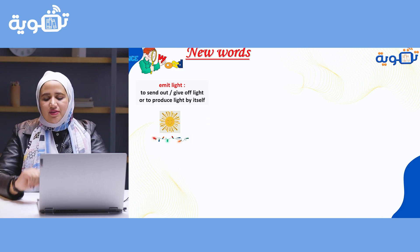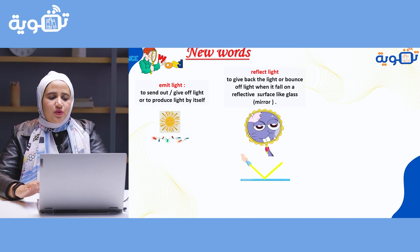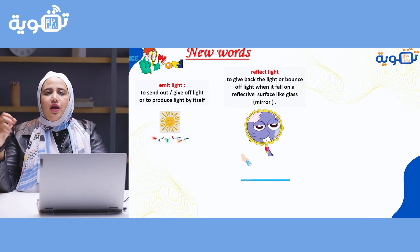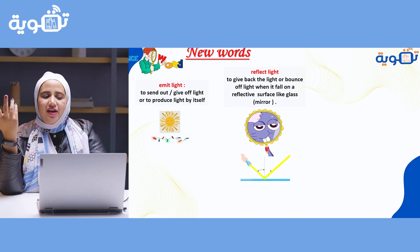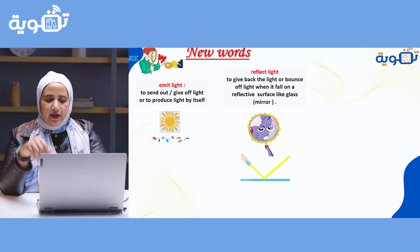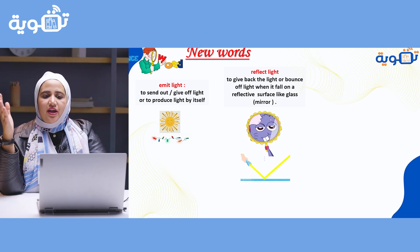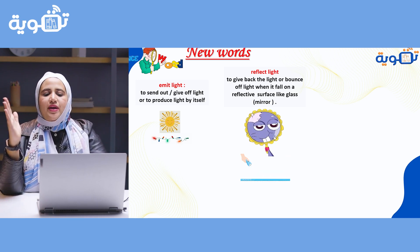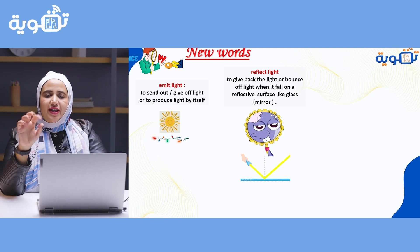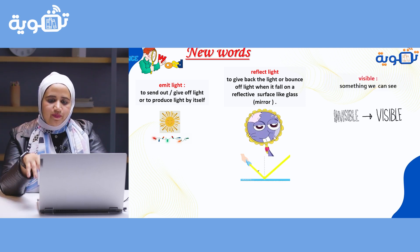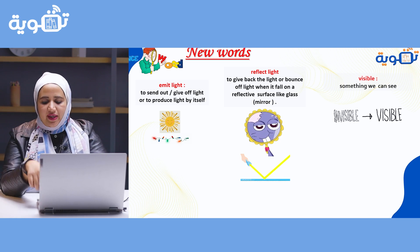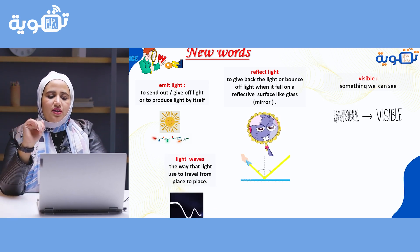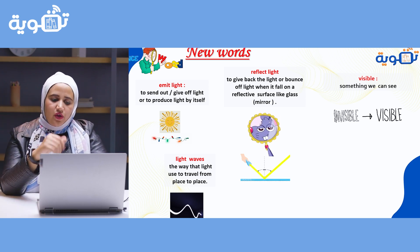What are our new words today? The first word: emit light — like send out light, give off light, produce light. Reflect light — give back the light or bounce off light when it falls on a reflected surface like a mirror. Visible — something we can see. Light wave — the way that light travels from one place to another.